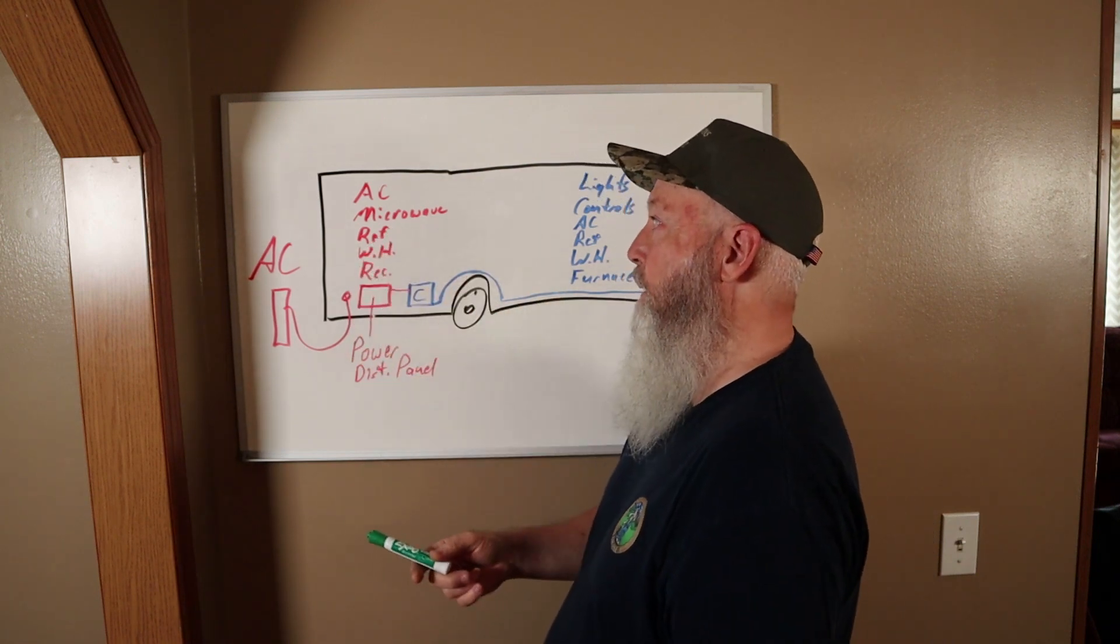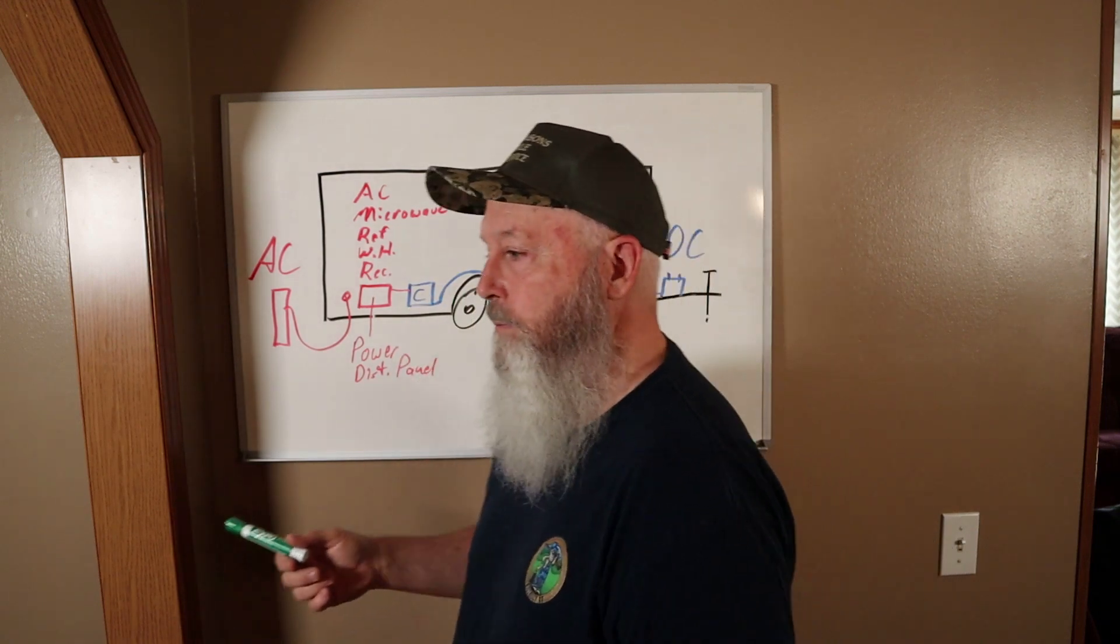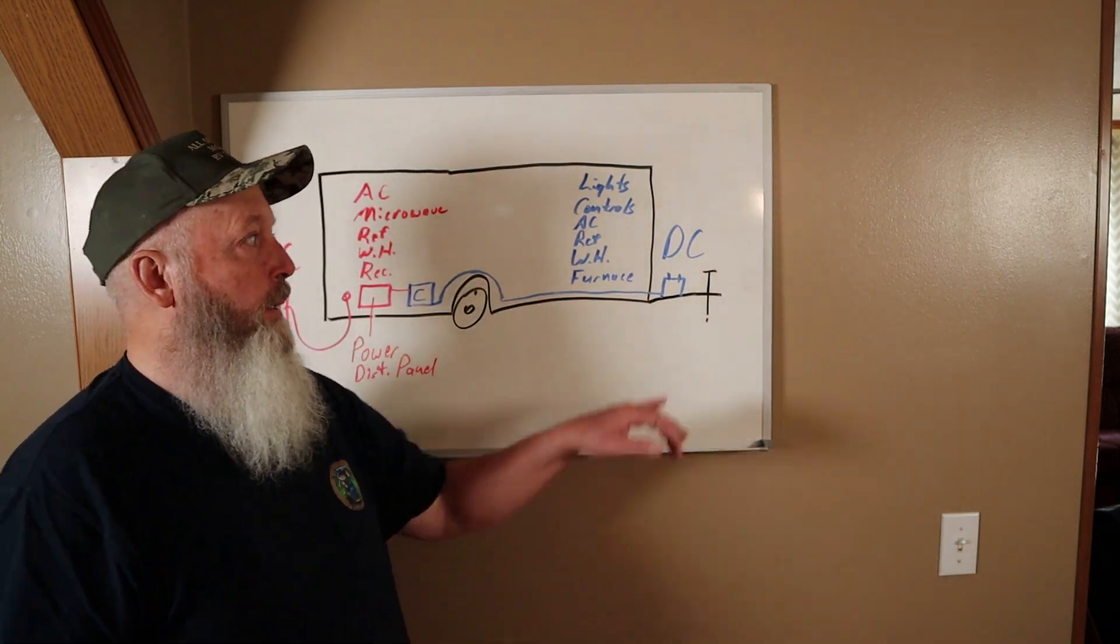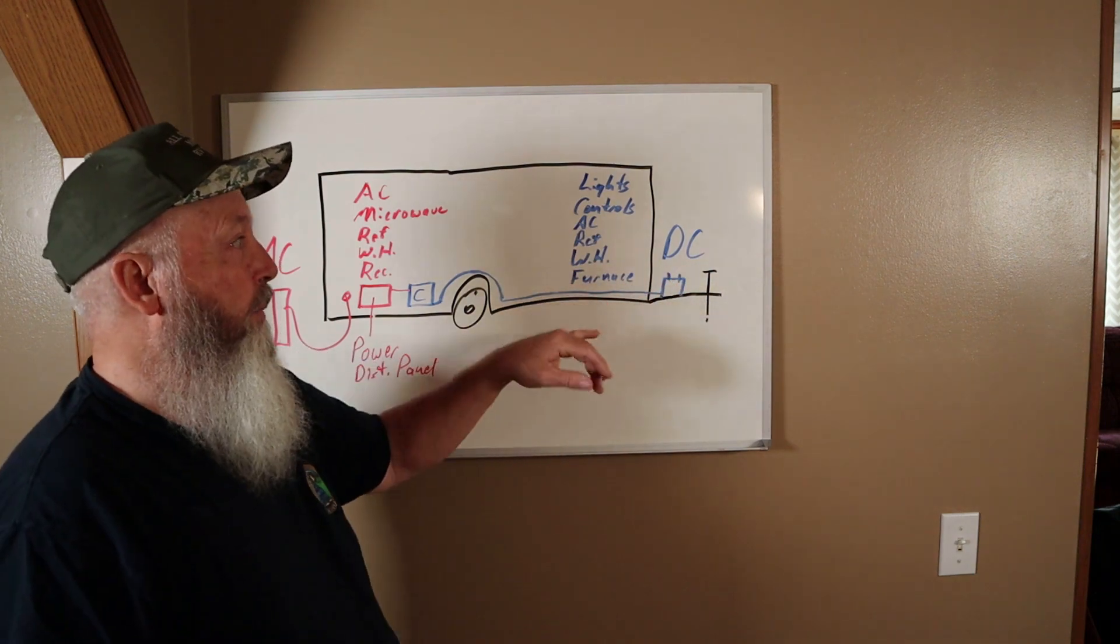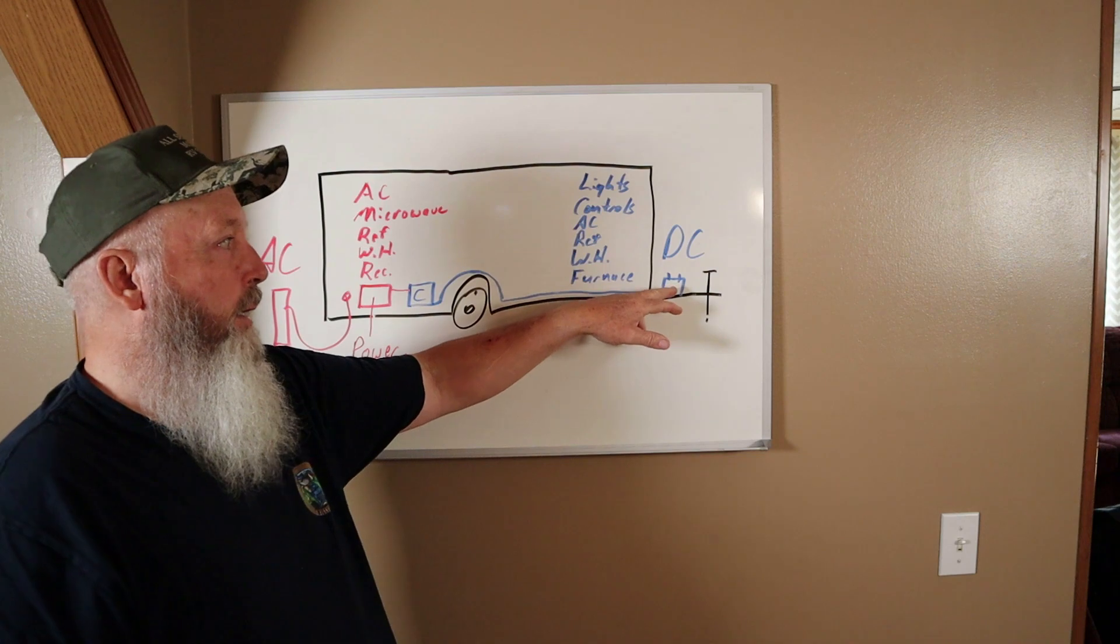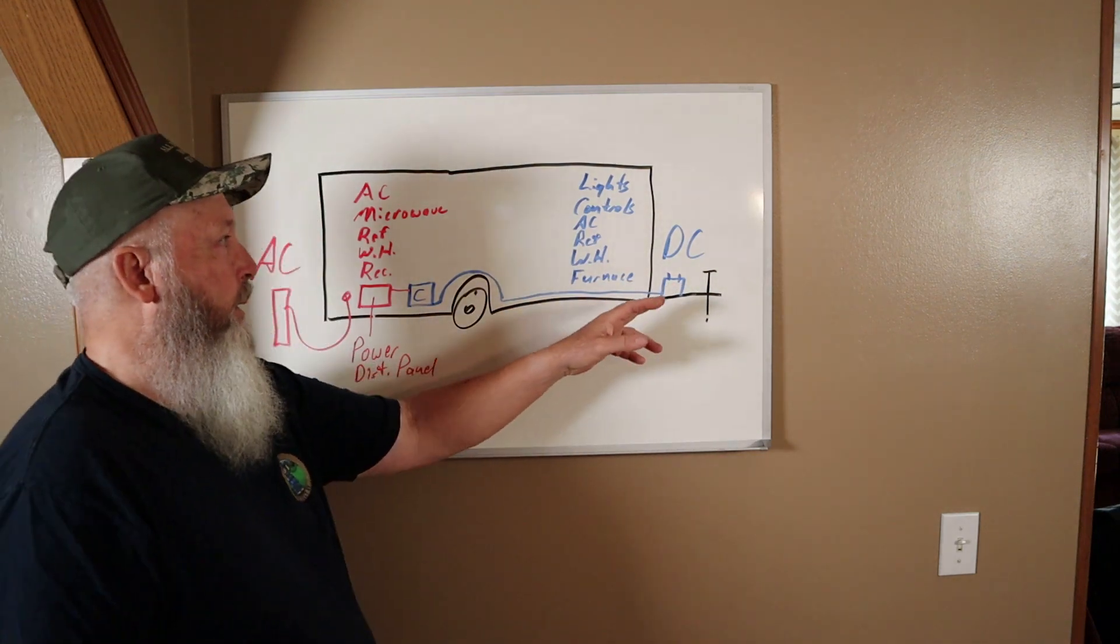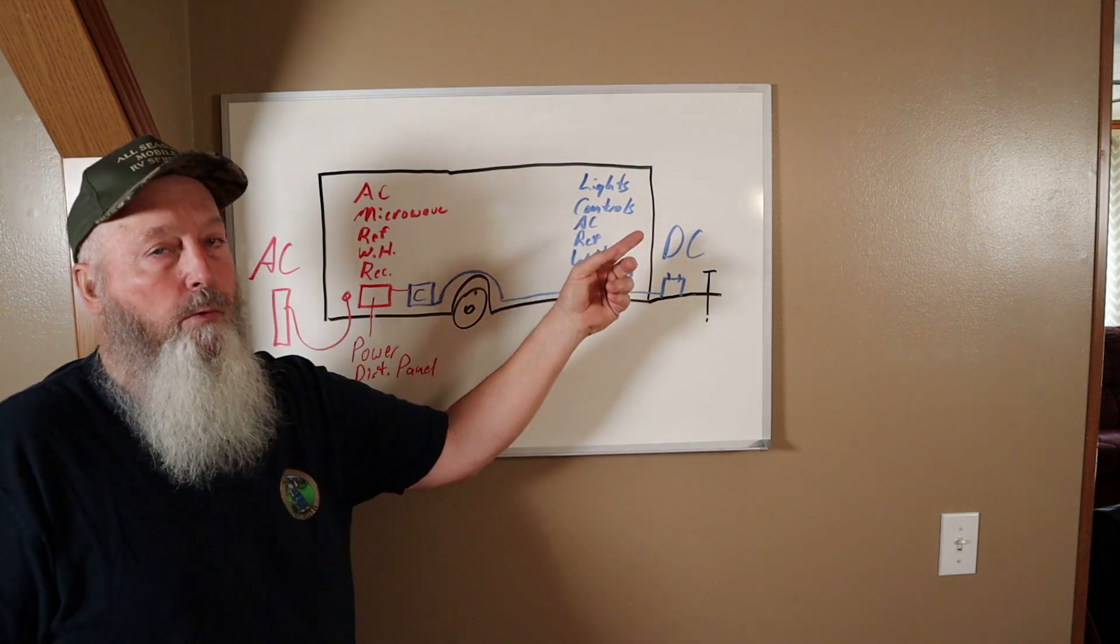Now let's move to the DC side. Your DC is your direct current and let's just for the sake of argument say it originates at your battery on the tongue of your camper. What's it run? It runs your lights, it runs the controls for your air conditioner, your refrigerator, your water heater - just the controls part.